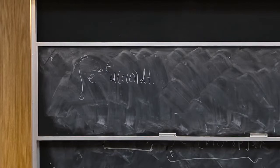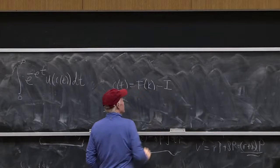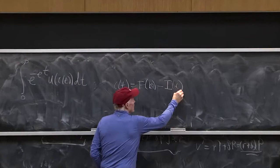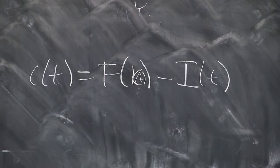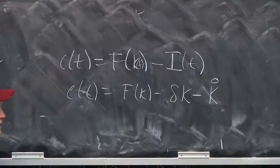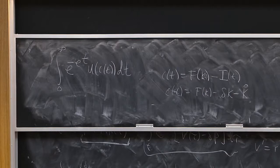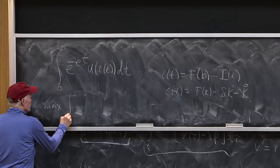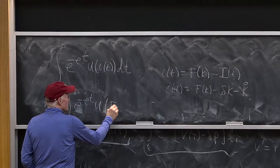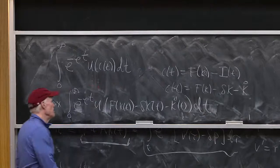In this model, the technology gives us: c of t equals f of k minus i of t. Everything is a function of t, but c is just the difference between output and investment. So c of t equals f of k minus delta k minus k-dot. My consumption at date t is output minus depreciation minus k-dot.